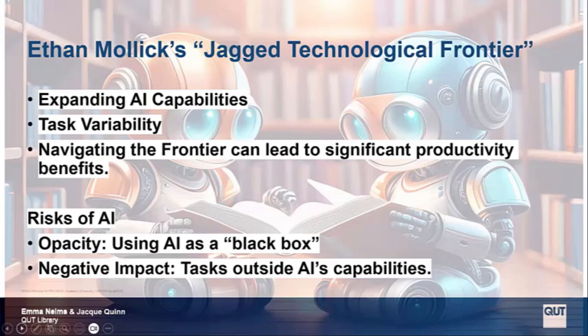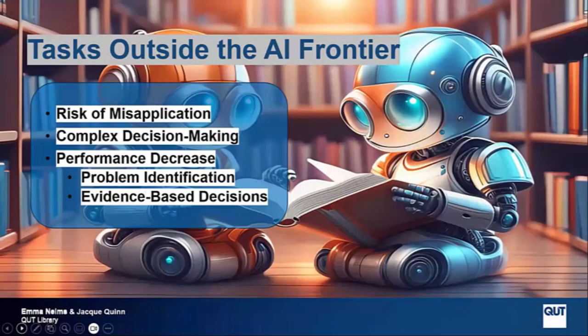The risks of AI is partly its opacity. Using AI is like a black box — we don't really know what's inside it and what it can do. Tasks outside AI's capabilities can negatively impact productivity and quality, as AI's performance drops for tasks requiring deep understanding and contextual knowledge. Misusing AI for tasks beyond its capabilities can lead to inefficiencies. AI struggles with nuanced decisions and integrating varied data sources, such as problem identification, developing a deep understanding of specific business or learner problems, and evidence-based decisions.